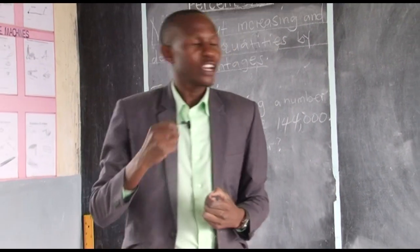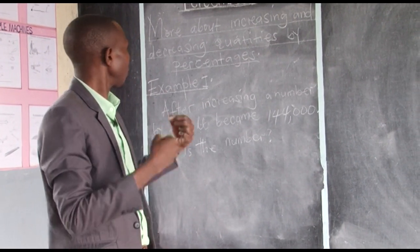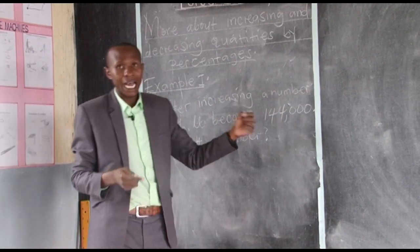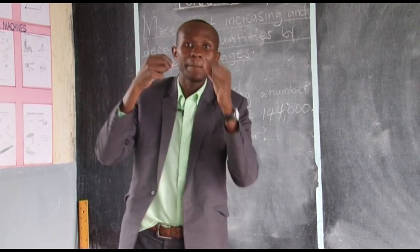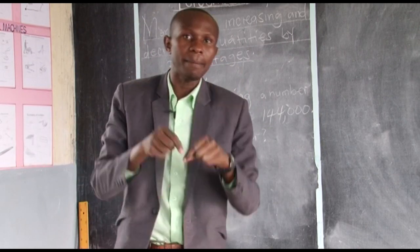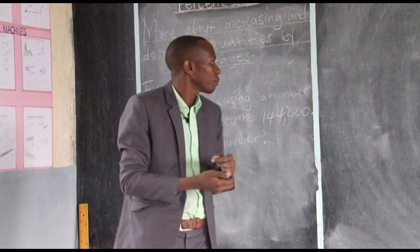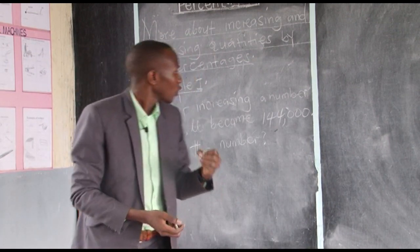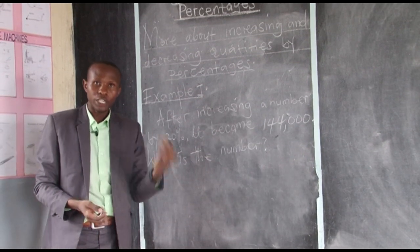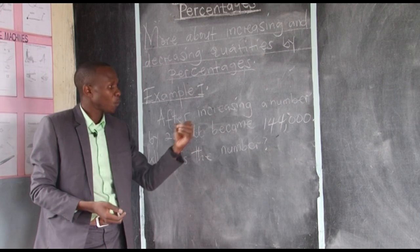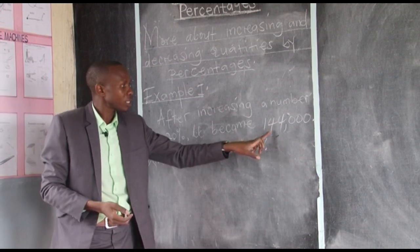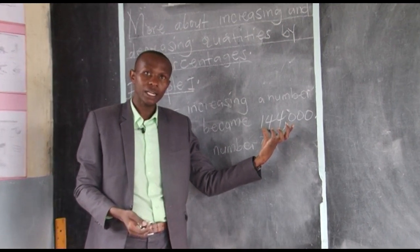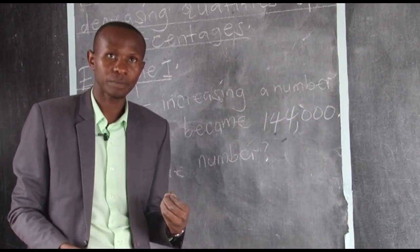Let's analyze what the question wants us to do. They are saying this number was increased, but they don't tell us which number was increased before they got this result. Last time we worked out the increment; now we want to find the number that was increased before they came out with 144,000.